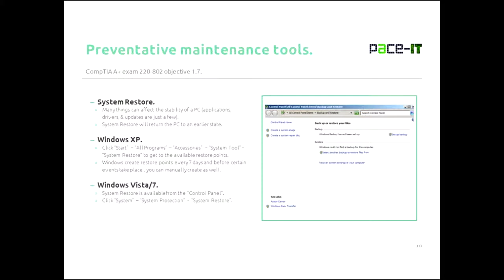In Windows Vista and 7, System Restore is available from the Control Panel. Once you get there, you click on the System utility, then System Protection, and then System Restore.